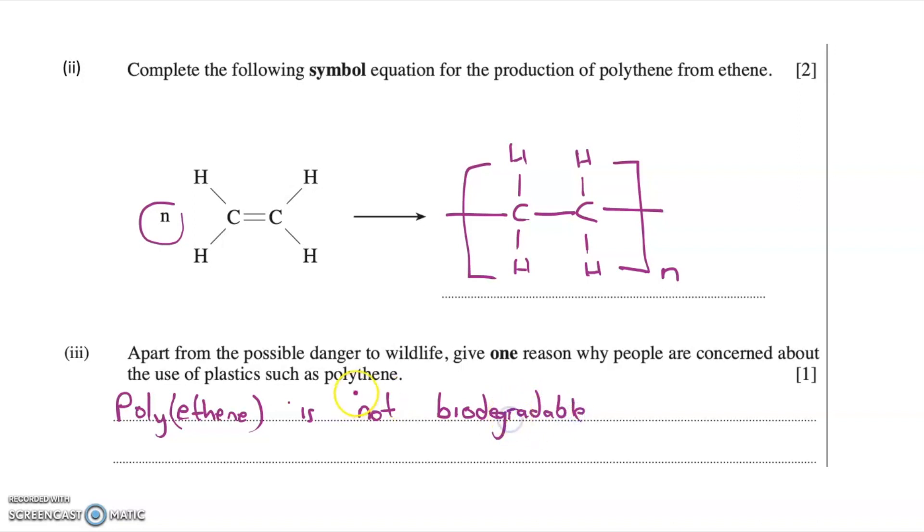Now if you look at part three, it says, apart from the possible danger to wildlife, give one reason why people are concerned about the use of plastics such as polythene. Well, it's because polythene is not biodegradable. It doesn't rot if you just dump it somewhere. So therefore, it's difficult to dispose of. So if you said it's not biodegradable, and therefore it's difficult to dispose of, and therefore this would result in landfill sites being filled up, that would get you a mark for that.